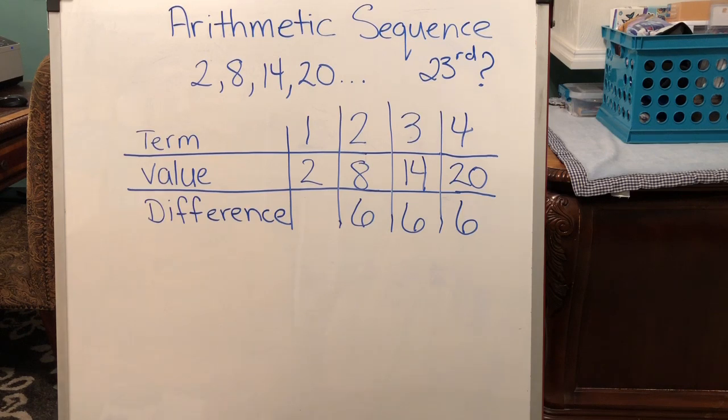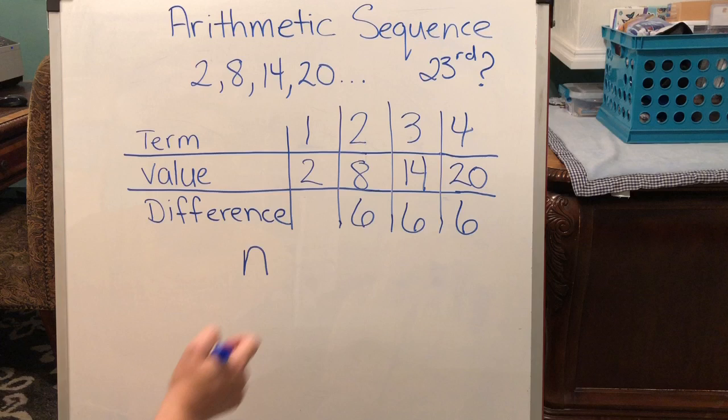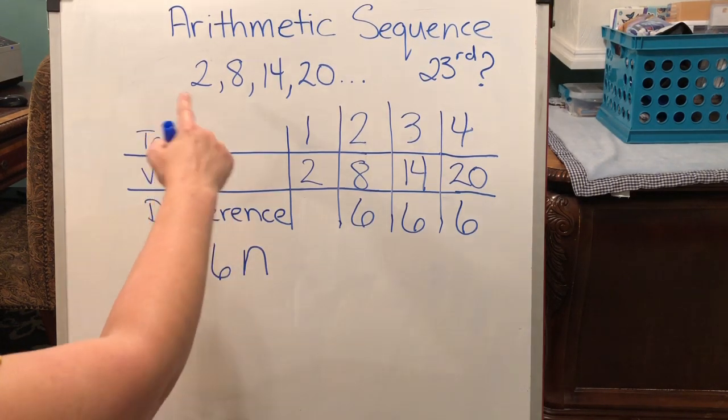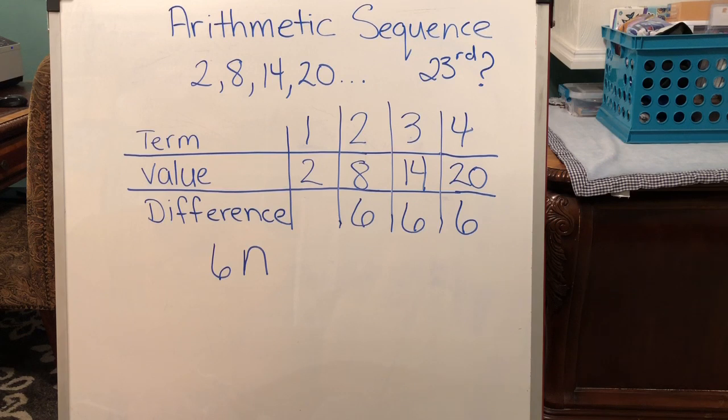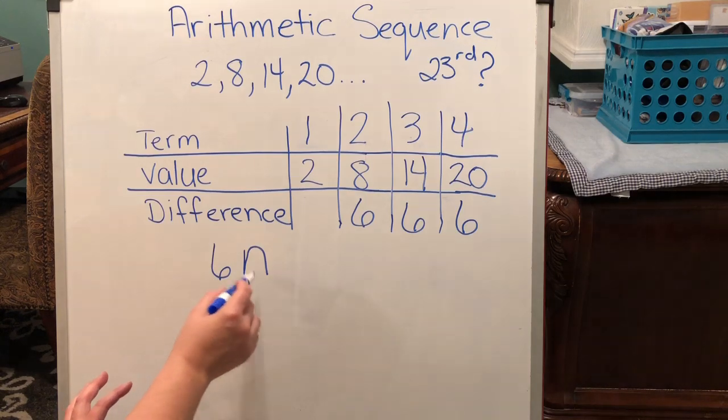So we're going to start by creating a formula where n is going to be any term. It's our unknown, we can put in whatever term we want to find, we can substitute it in for n, and then we can solve and figure it out. So n is our term. We're going to multiply that term by the difference, and our difference here in this sequence is 6. Now, the last part to get this equation is a little confusing, but once you go through it a few times, you'll understand it.